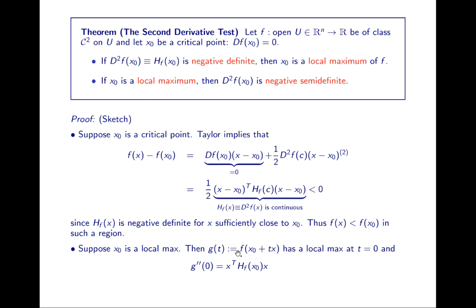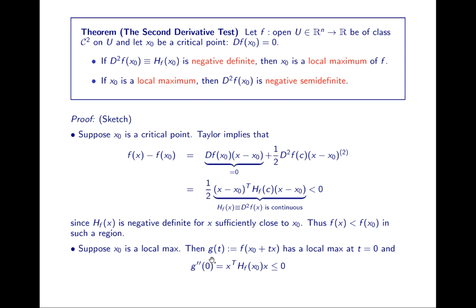For the converse, suppose x0 is a local maximum and define g(t) = f(x0 + tx). Then g is locally maximal when t = 0. Taking the second derivative of g gives xᵀ H(x0) x. Since g(t) has a local max at t = 0, the Calculus 1 second derivative test tells us this must be ≤ 0. Since x was arbitrary, the Hessian is negative semi-definite.